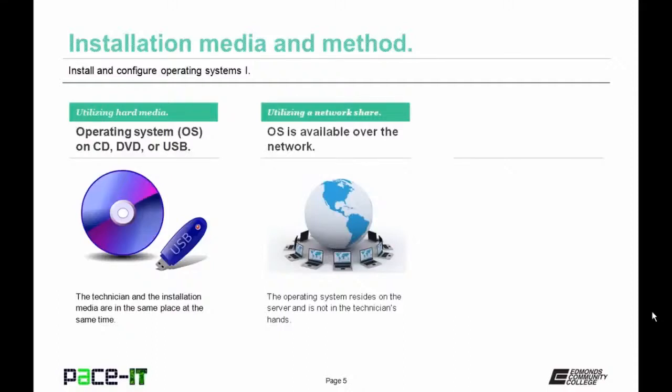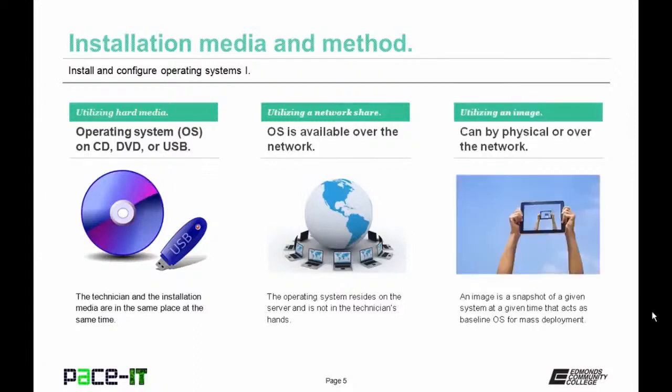Another type of media is the network share — the operating system is available over the network and the media is not in the technician's hands. Finally, you can use an image, which can be on physical media or over the network. A base operating system has been created and stored in a file — this is best for mass deployment.